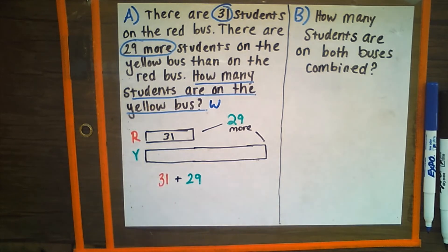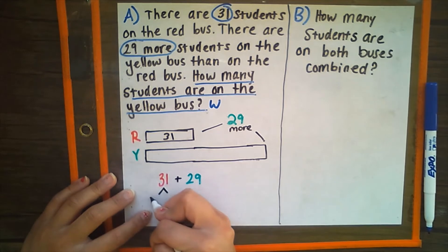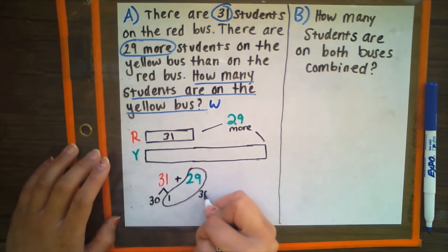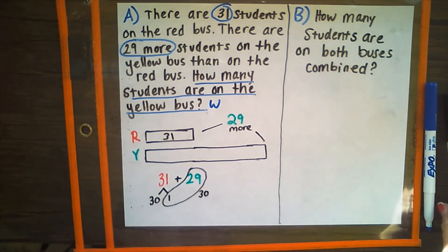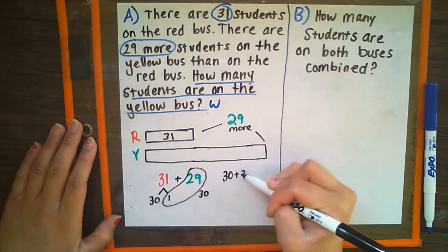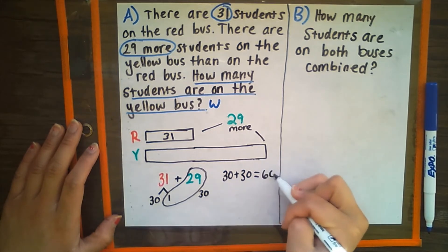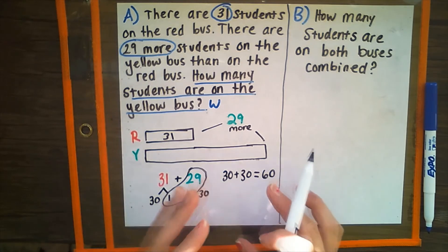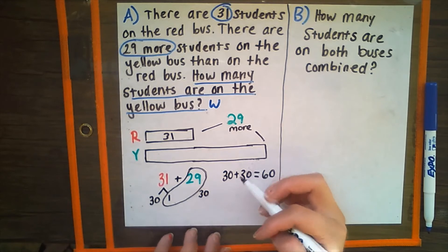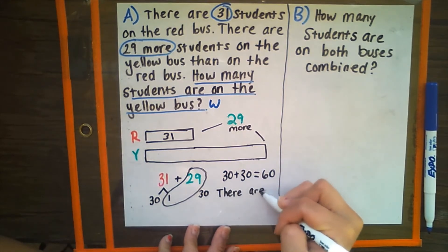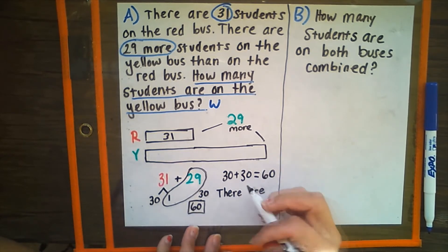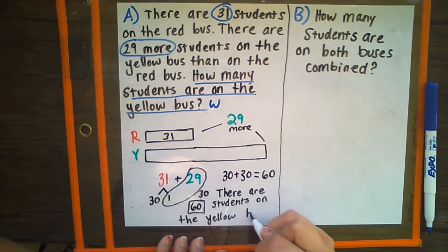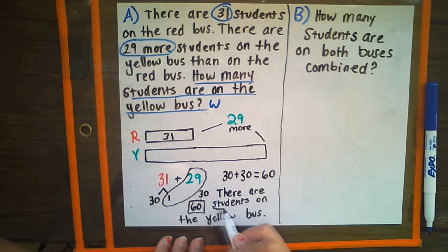Now this can be tricky or it can be easy. Let's break up our 31 into 30 and 1 by our place values, and combine our 29 and our 1 to make 30. Now we have 30 plus 30, so let's write that new number sentence: 30 plus 30 equals 60. Great job. Our number sentence is 30 plus 30 equals 60 — that's the new bundling we did to make it easier to add. Now we're going to write our word sentence: there are 60 students on the yellow bus. Box in your solution and underline your unit, which is students because we're counting students.